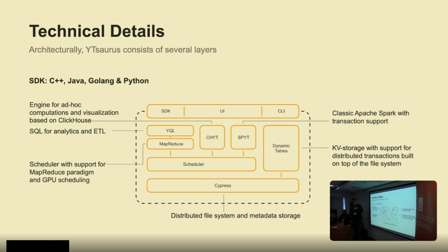We have two kinds of tables. First are static tables, which allow you to store data for analytics like logs — you can append data there, similar to files. However, if you'd like to change data, it's expensive; you need to run MapReduce or another operation to process a large block of your table. We also have dynamic tables, which are a transactional key-value store built over Cypress. This allows you to use Waitisaurus as an OLTP storage — tables with transactions, similar to HBase but with transactions, or Google Spanner.